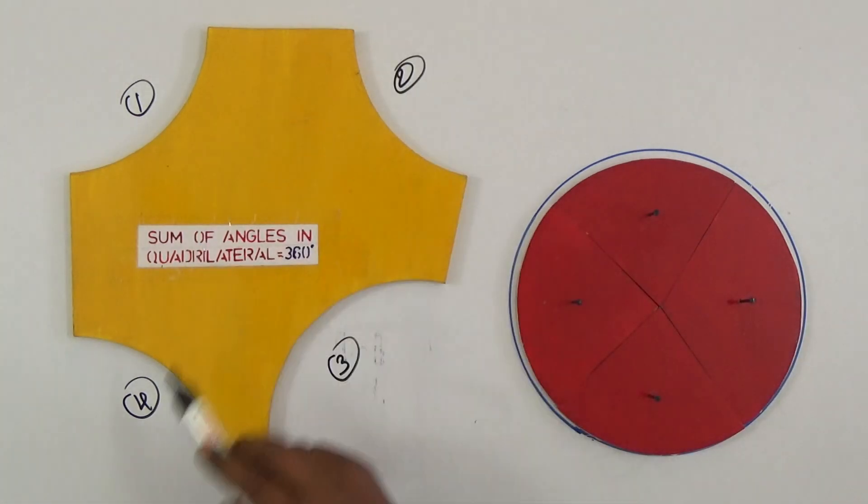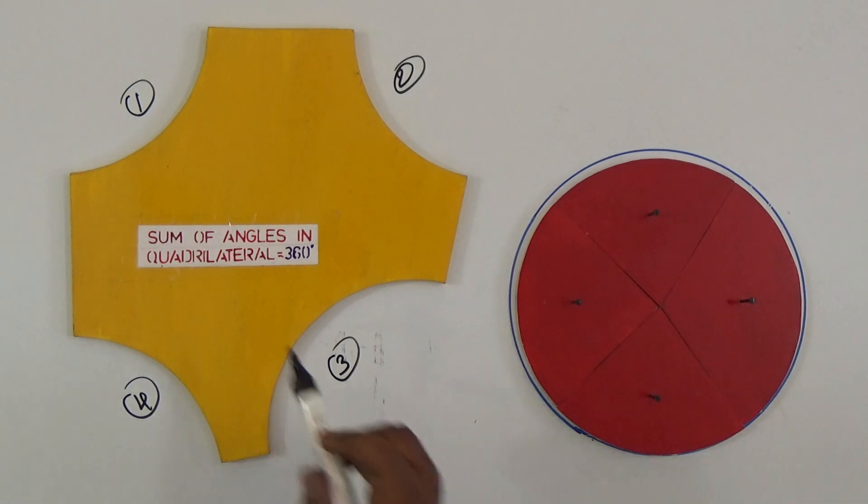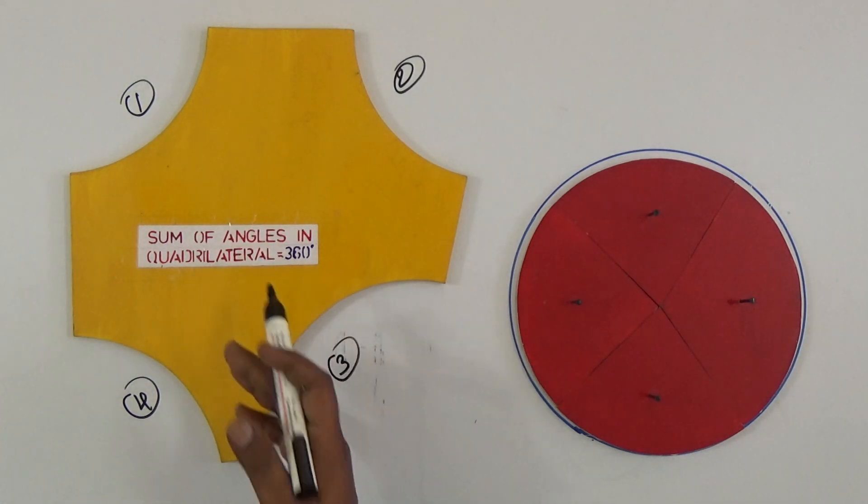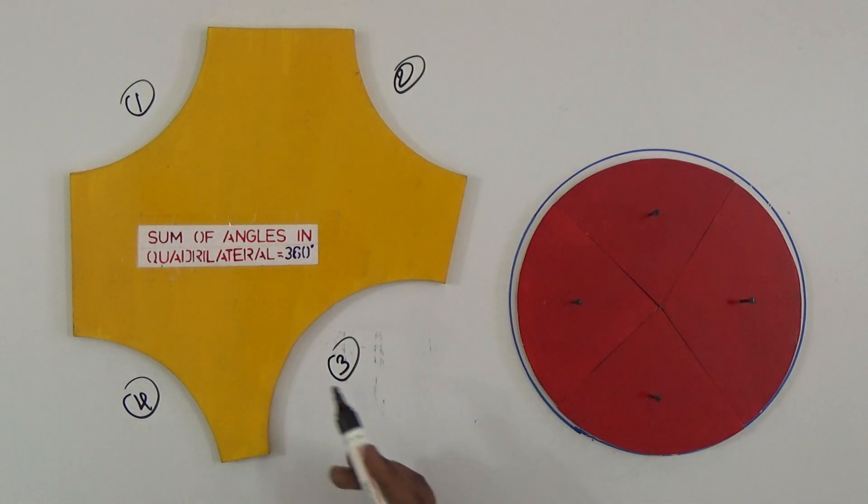We already know the angle in the circle total is 360 degrees. So sum of the angles in a quadrilateral is 360 degrees. This is a simple and easy method to prove any quadrilateral, not only this type. Any type of quadrilateral: square, rectangle, trapezium, rhombus, or any quadrilateral.